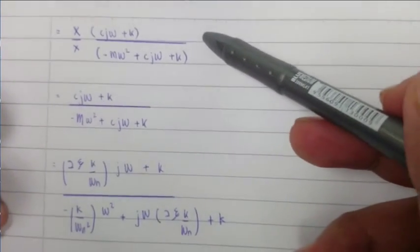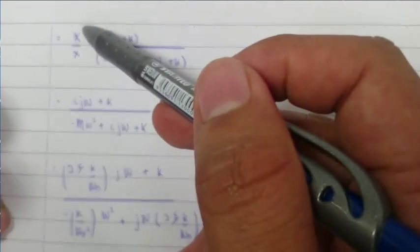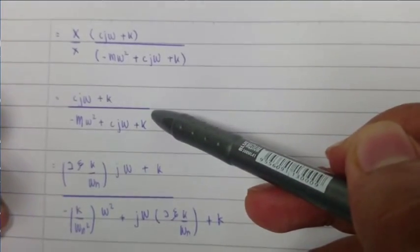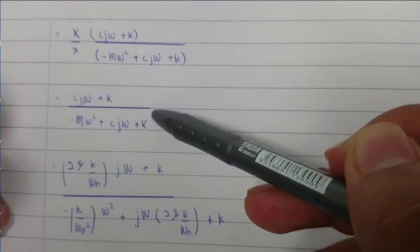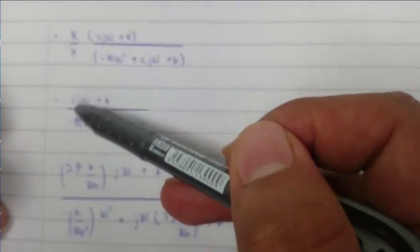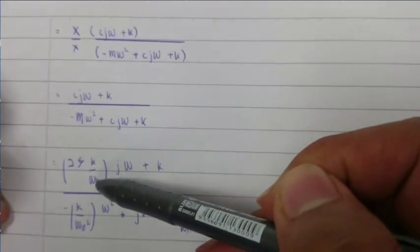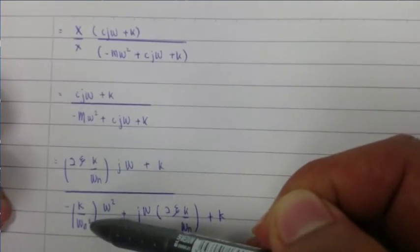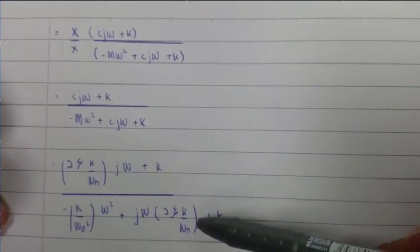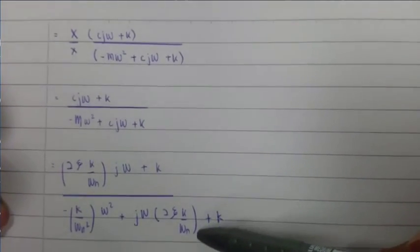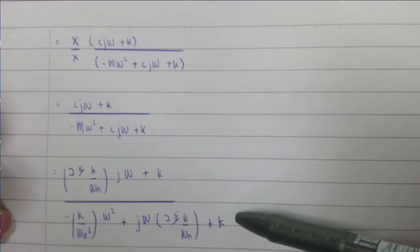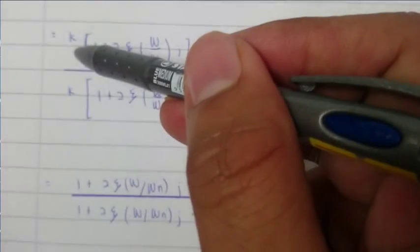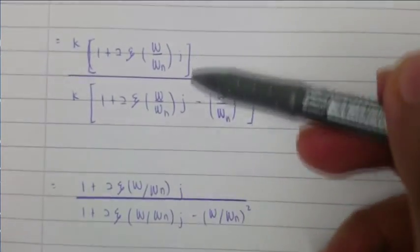After we simplify the equation, we replace C with 2ζk/ωn, M with k/ωn², and C again with 2ζk/ωn. We will get this equation. Next we simplify the equation, we put k outside, and we will get this equation.